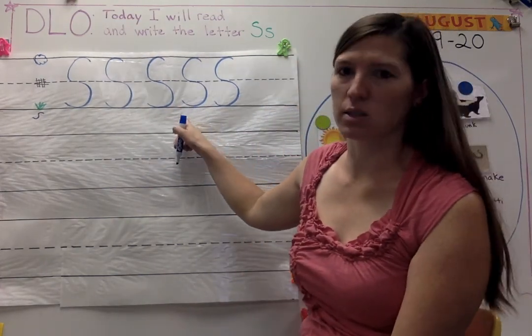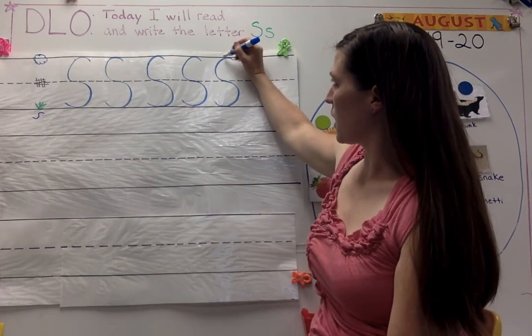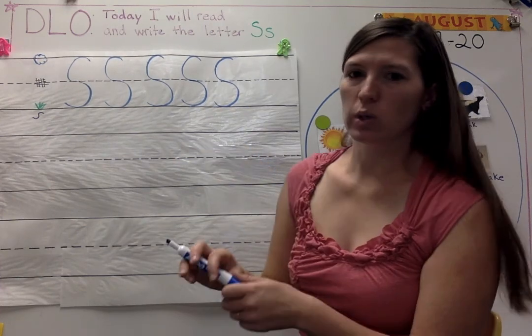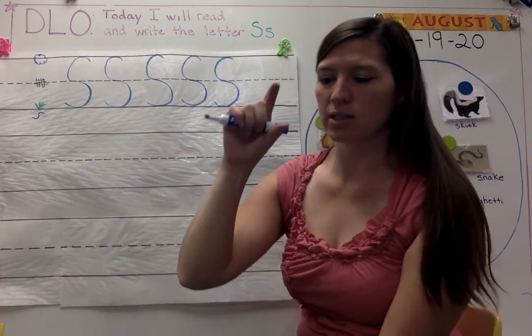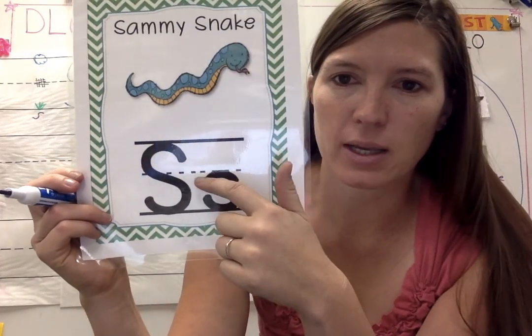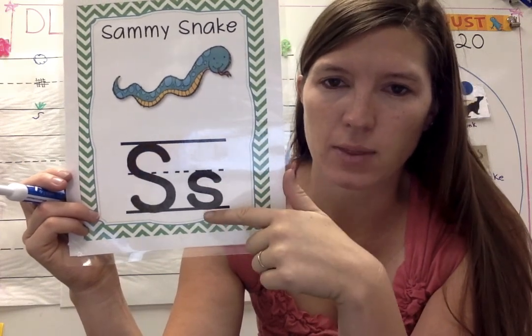Everyone say capital S. Capital S touches the sky, touches the ground. Let's do lowercase s. I'll go to my next line. Lowercase s is short. If it's short, it touches the middle line, our fence, and the ground.